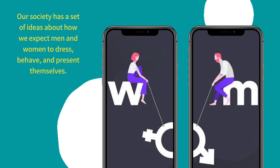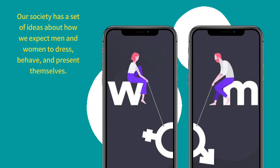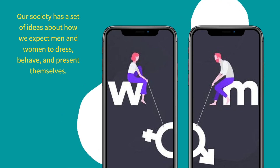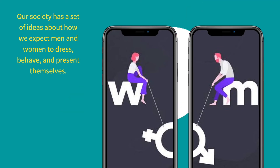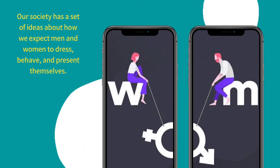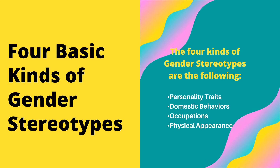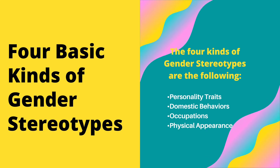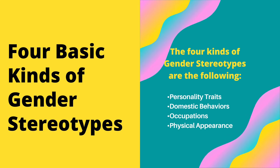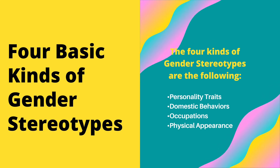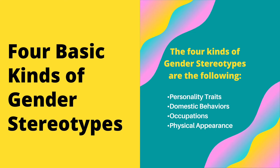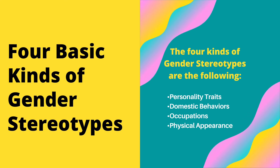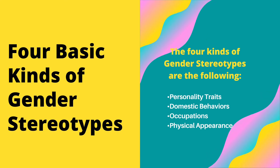When individuals don't conform to our gender stereotypes, the result can lead to discrimination and create unequal or unfair treatment. Now let us proceed to our four basic kinds of gender stereotypes. The four kinds of gender stereotypes are the following: personality traits, domestic behaviors, occupations, and physical appearance.